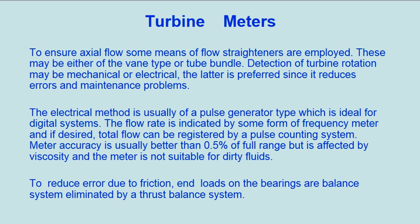The electrical method is usually of a pulse generator type, which is ideal for digital systems. The flow rate is indicated by some form of frequency meter and, if desired, total flow can be registered by a pulse counting system. Meter accuracy is usually better than 0.5% of full range, but is affected by viscosity, and the meter is not suitable for dirty fluids.